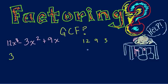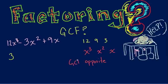Now let's look at our variables — we have x cubed, x squared, and x. What's the biggest variable that goes into all of these? A lot of my students say x cubed is the biggest, and it is the biggest, but the biggest one that goes into all of them is kind of the opposite. For variables, the greatest common factor is actually the smallest variable, because it's the one that goes into all three of them. So x goes into x, x goes into x squared, and x goes into x cubed — so x is our greatest common factor.